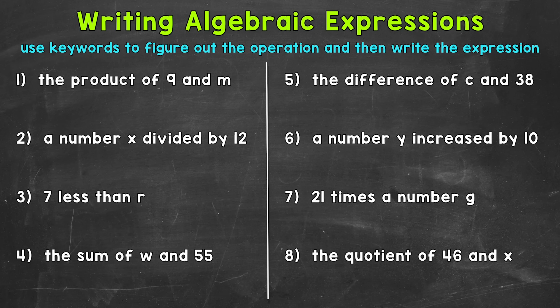Product means the answer to a multiplication problem. So we know this is going to be multiplication: 9 times M. M is our variable — it's a letter that represents a value we do not know yet, so an unknown.